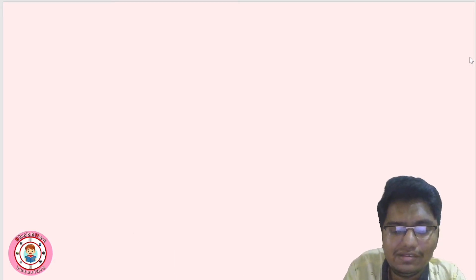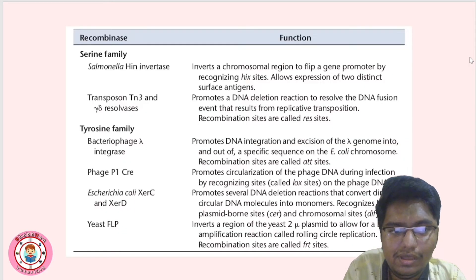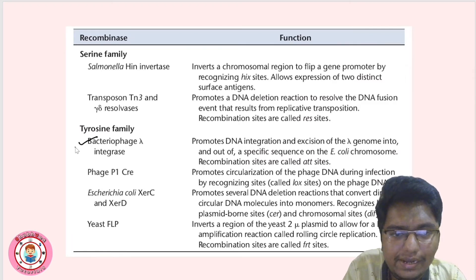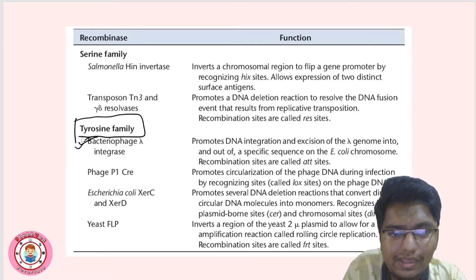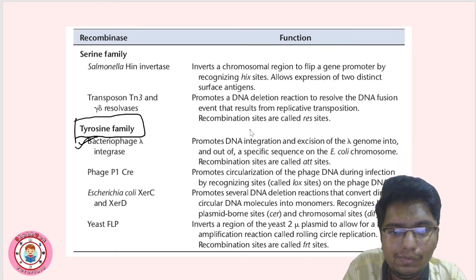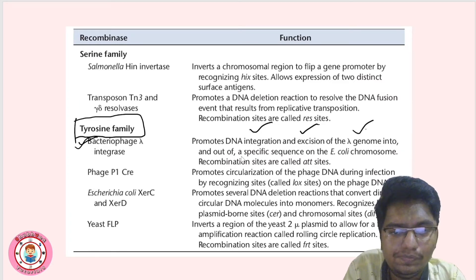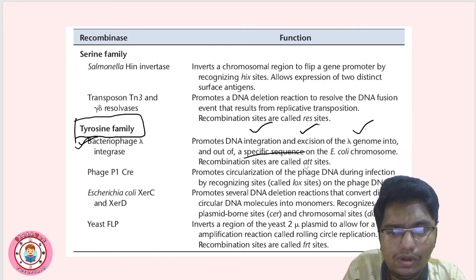In the previous video, we discussed examples of recombination. We saw a chart showing that bacteriophage lambda integrase is an example of a tyrosine family recombinase enzyme. It promotes integration and excision of the lambda genome into and out of specific sequences on the E. coli chromosome. The recombination sites are called ATT sites.